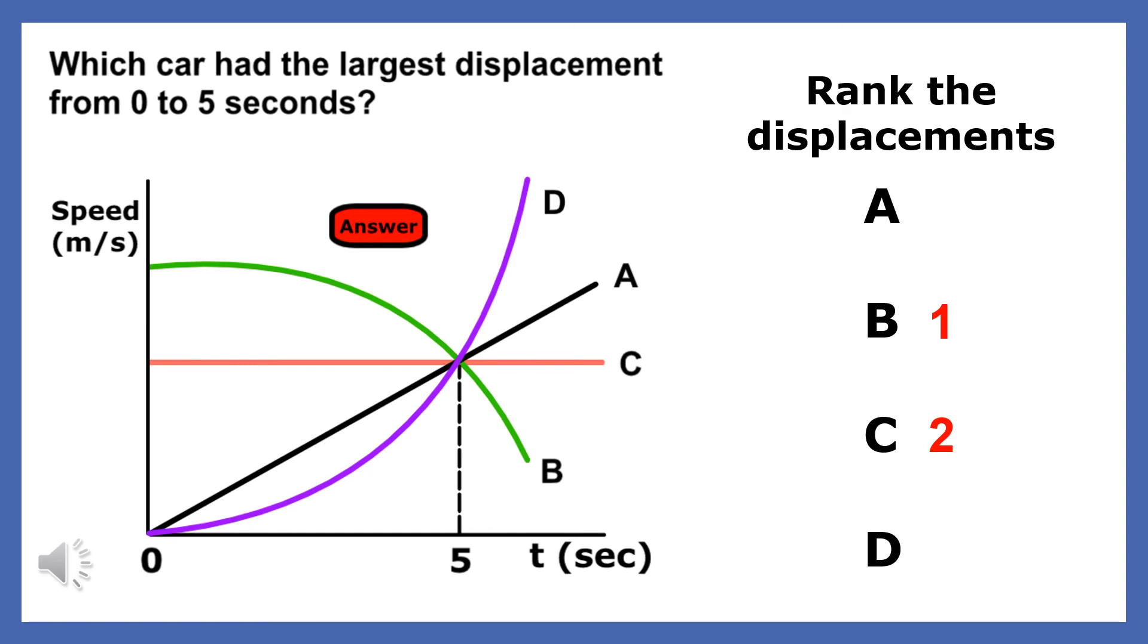The object with the third greatest displacement from 0 to 5 seconds is object A.